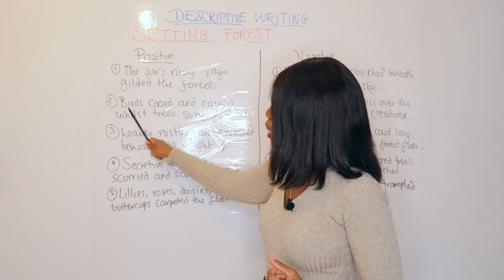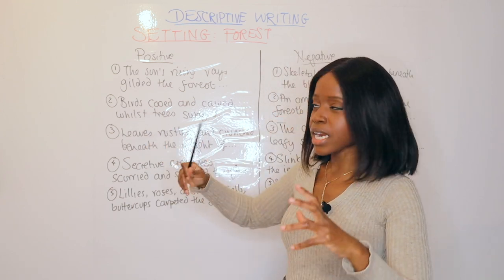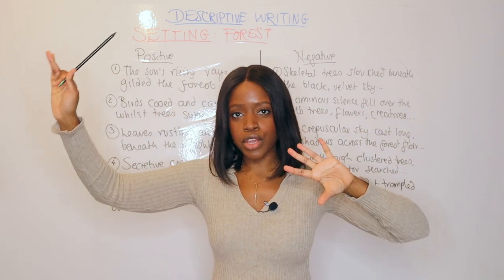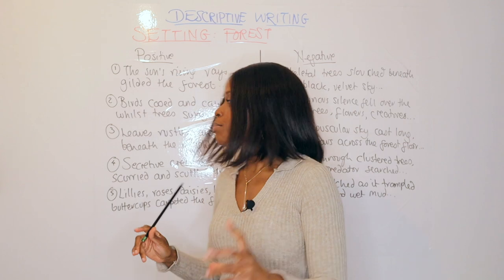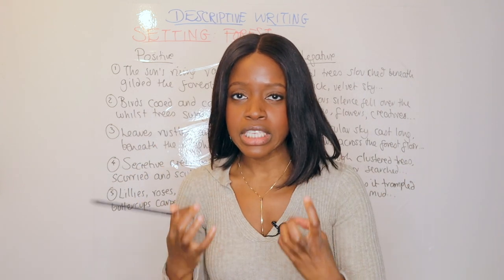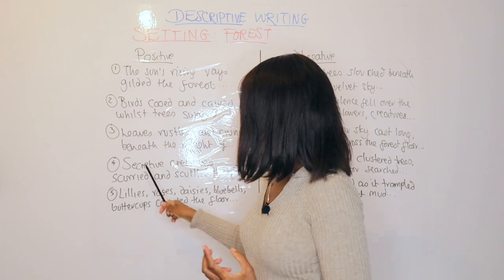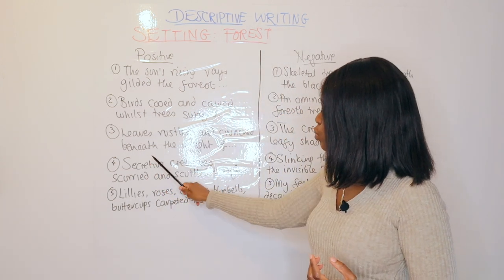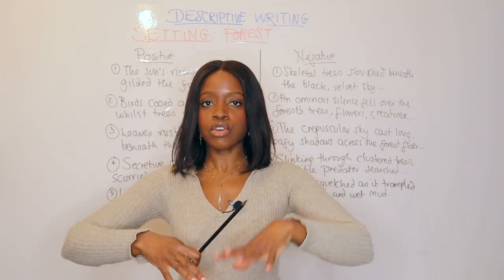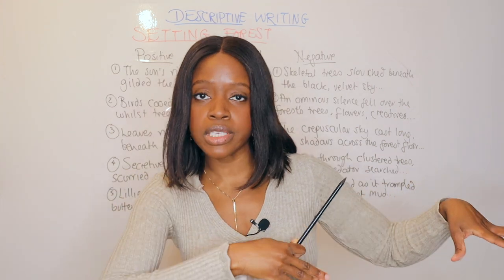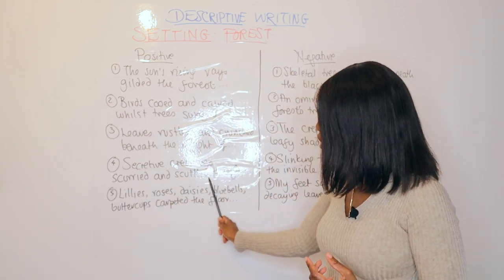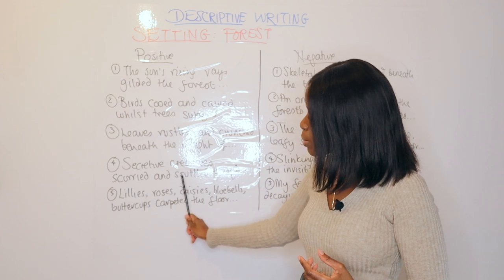The second phrase: 'Birds cooed and cawed whilst trees swayed.' This describes the atmosphere and mood — what you can hear and even smell, like the earthy scent within the forest. The third phrase: 'Leaves rustled and crunched beneath the weight of' — it could be beneath your weight as you step forward, or beneath the weight of a squirrel scuttling across the forest floor.